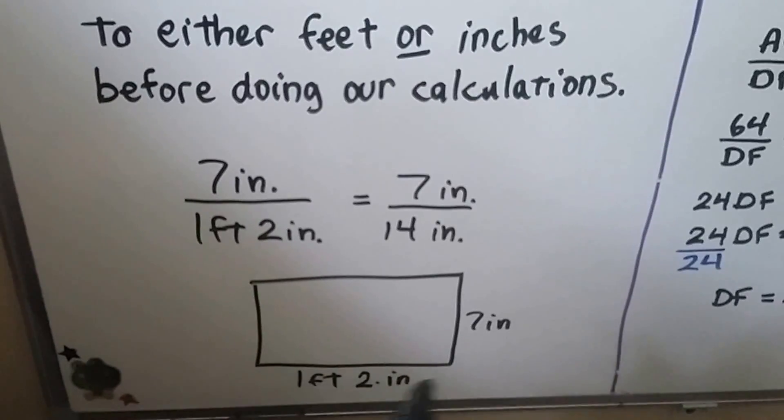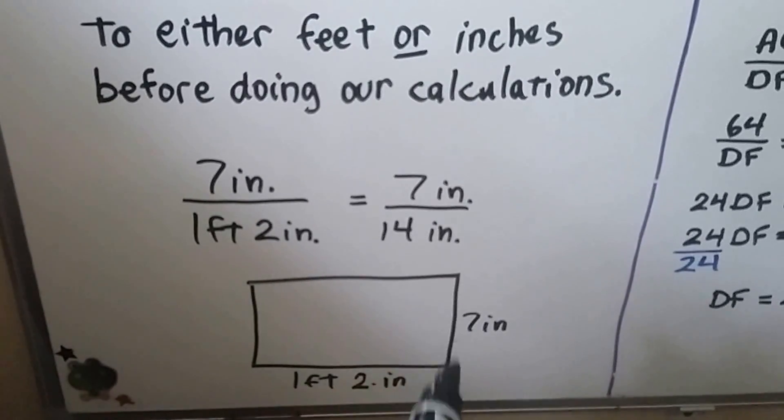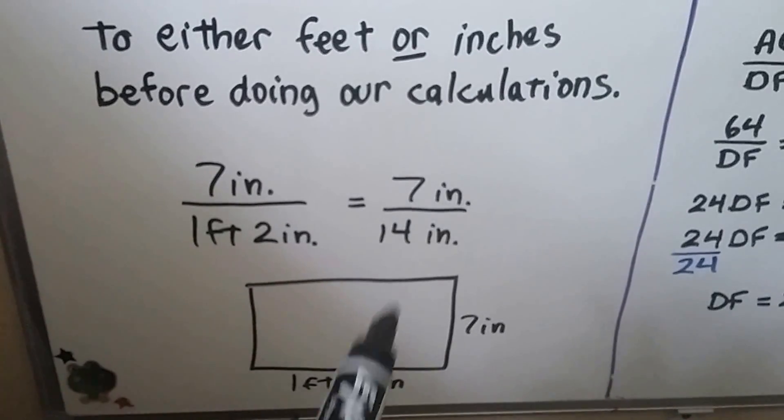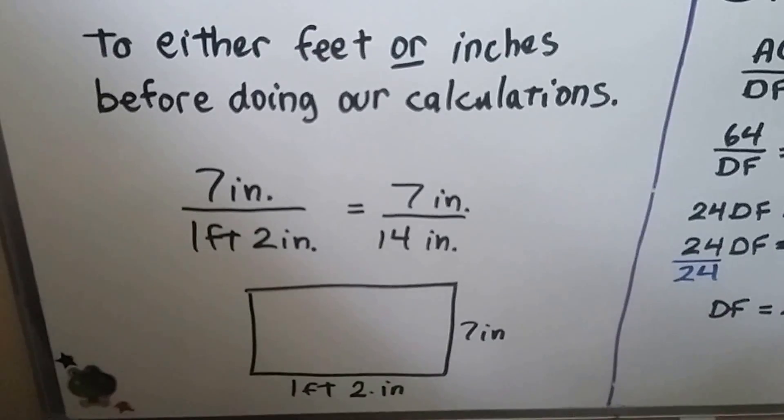If we have this width as 1 foot 2 inches and this height as 7 inches, we would turn this into 14 inches so that they would be the same units. That's for a dimension of something.